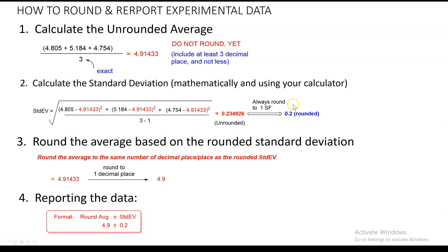After rounding the standard deviation to one significant figure, pay attention to how many decimal places that rounded value has — that tells us how to round the average. The rule is: round the average to the same number of decimal places as the rounded standard deviation. In this example, the unrounded average is 4.91433, and since the rounded standard deviation is 0.2 — which has one decimal place — we round the average to one decimal place as well. If the standard deviation rounded to the ones place, we would round the average to the ones place too.